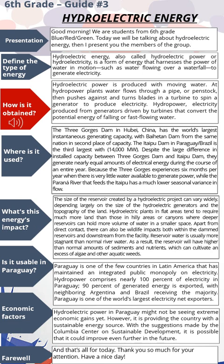How is it obtained? Hydroelectric power is produced with moving water at hydropower plants. Water flows through a pipe or penstock, then pushes against and turns blades in a turbine to spin a generator to produce electricity. Hydropower electricity is produced from generators driven by turbines that convert the potential energy of falling or fast-flowing water.